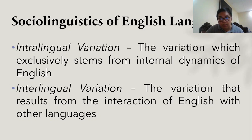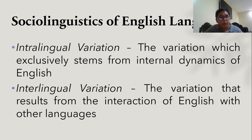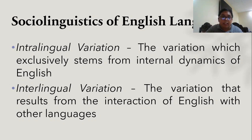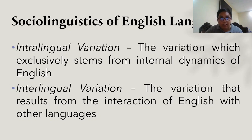We now have the sociolinguistics of the English language. There is intralingual variation — the variation which exclusively stems from the internal dynamics of English — and interlingual variation — the variation that results from the interaction of English with other languages. The variation tells us that we can improve our English either from within ourselves or from the experiences we have with other people.